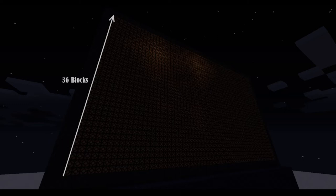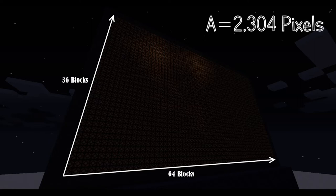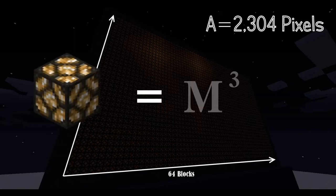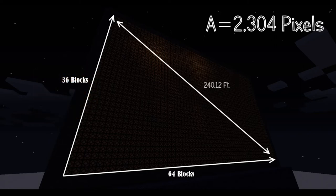Now for starters, the aspect ratio is that of a real HDTV, which is 16 to 9. The height of the screen is 36 pixels or blocks, and the length is 64, giving us a total of 2304 pixels. Now if one block is one cubic meter, then the length of the screen from corner to corner is over 240 feet.